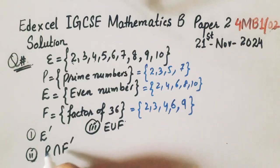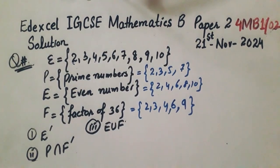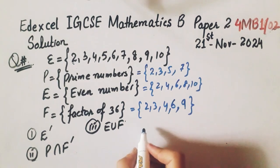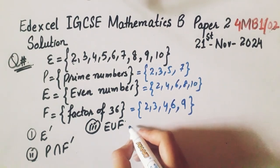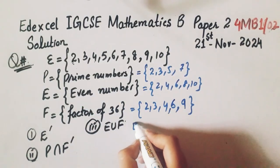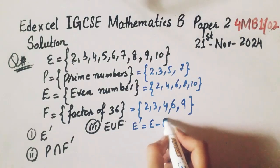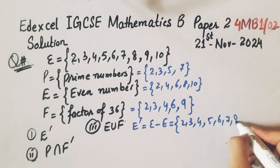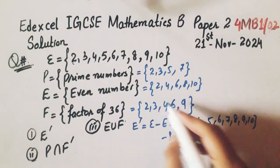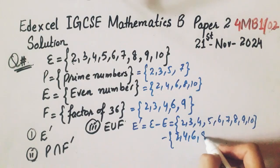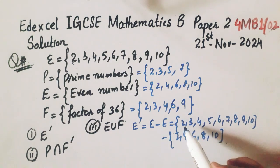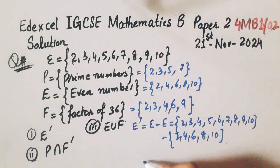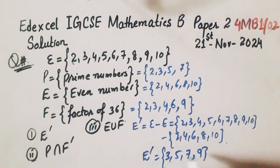Now we will solve first of all E complement. So E complement is equal to the universal minus E. So universal set is 2, 3, 4, 5, 6, 7, 8, 9, 10 minus E that is 2, 4, 6, 8, and 10. So the remaining are the numbers that are not even. So 3, 5, 7, and 9. These are the elements of E complement.